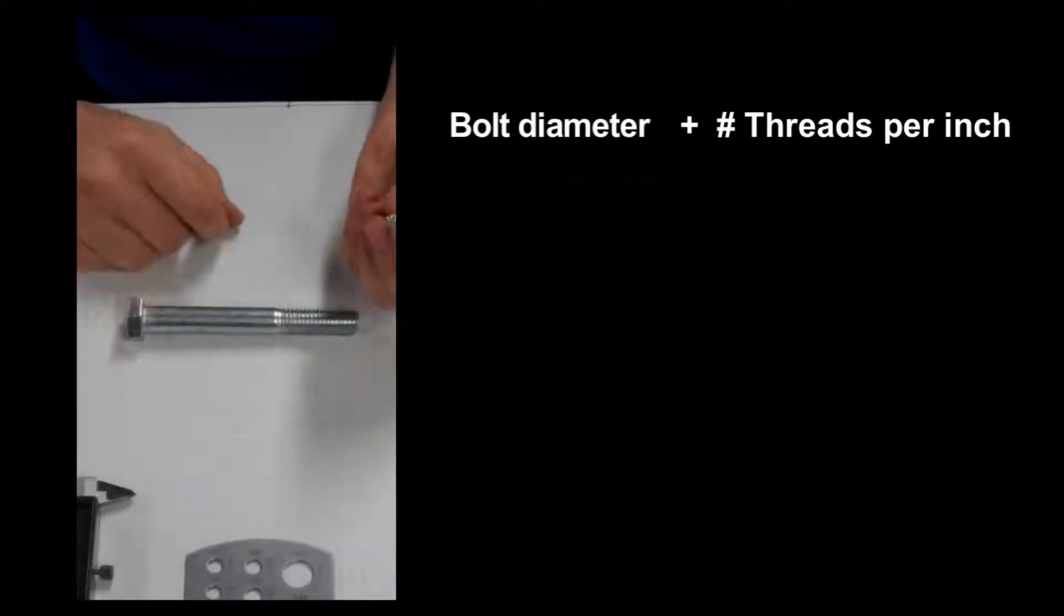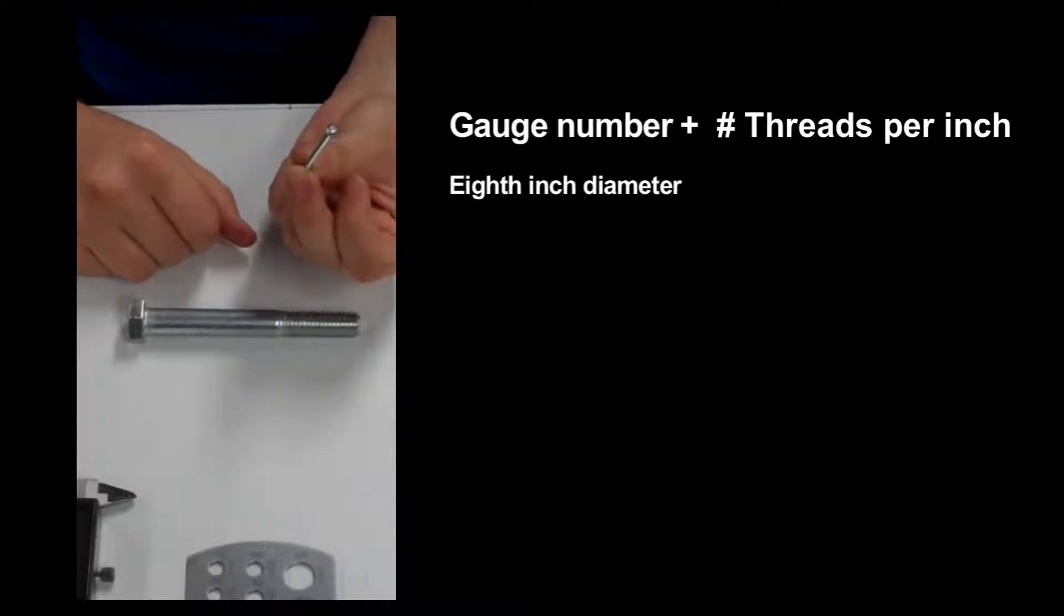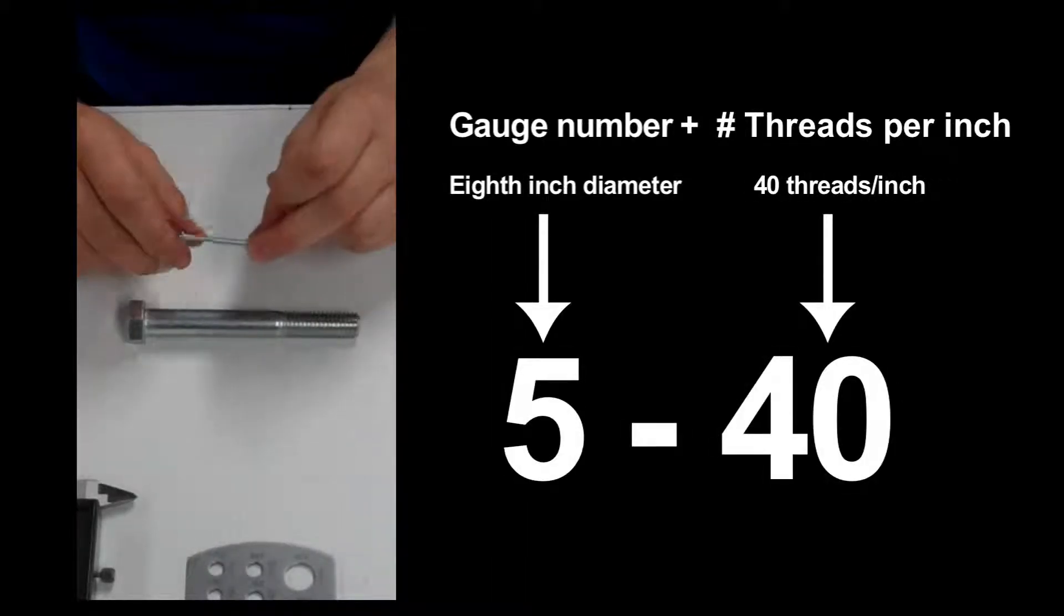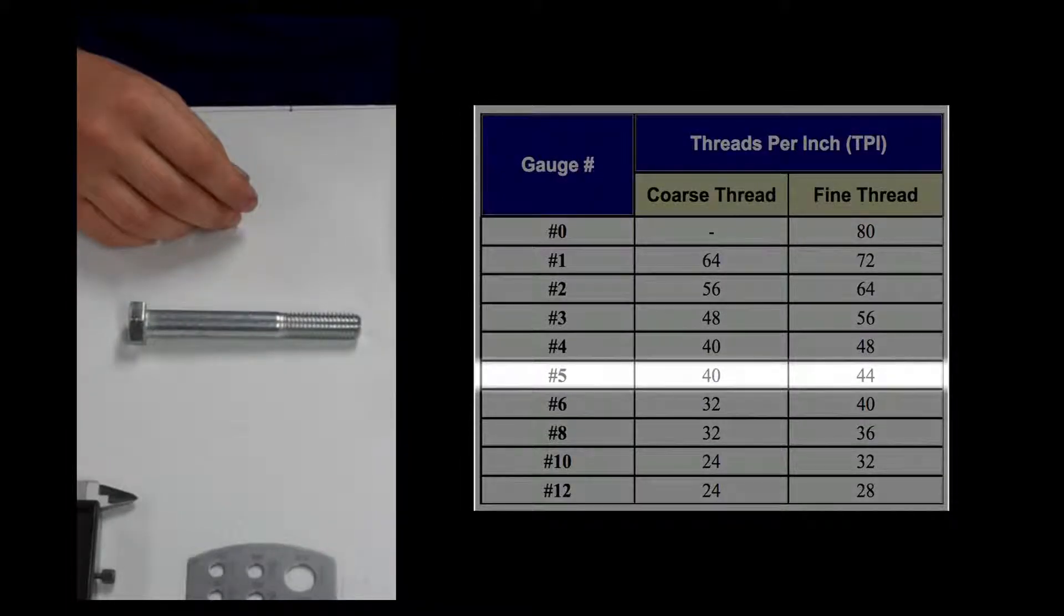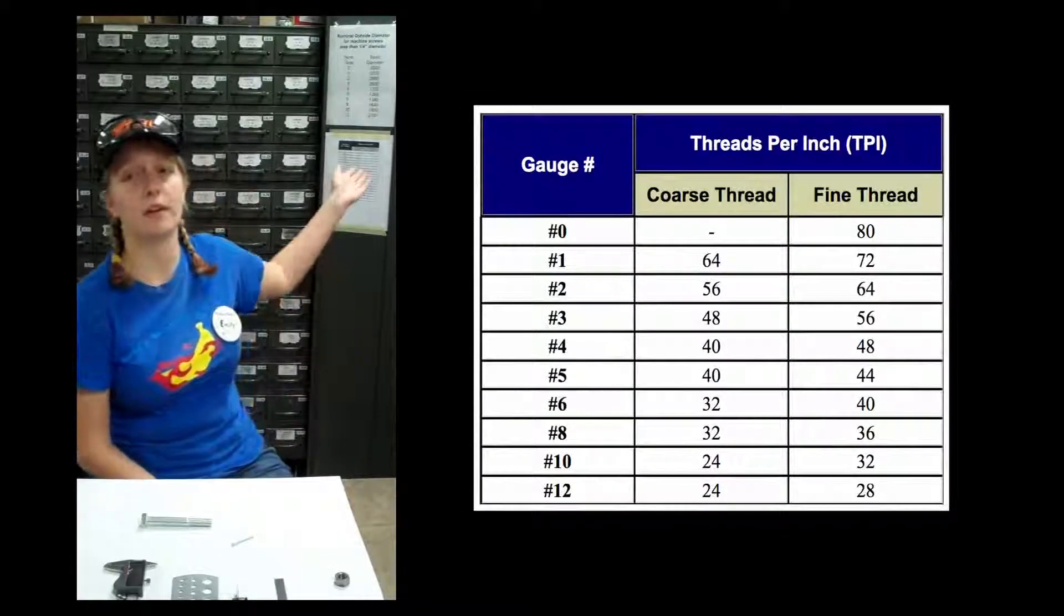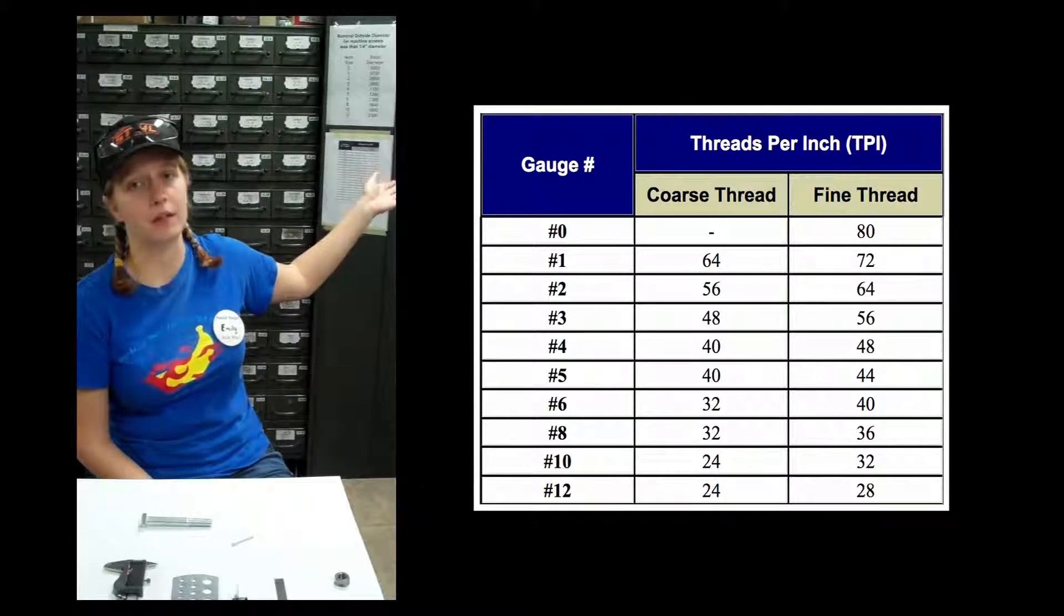Bolts that are smaller than a quarter of an inch are designated by a gauge number. So a bolt of a 1 eighth inch diameter and 40 threads per inch is called out as 540. Here's a list to show you which diameters correspond to which gauge sizes. You can find a copy of this list displayed on the fastener cabinet here in the stock room.